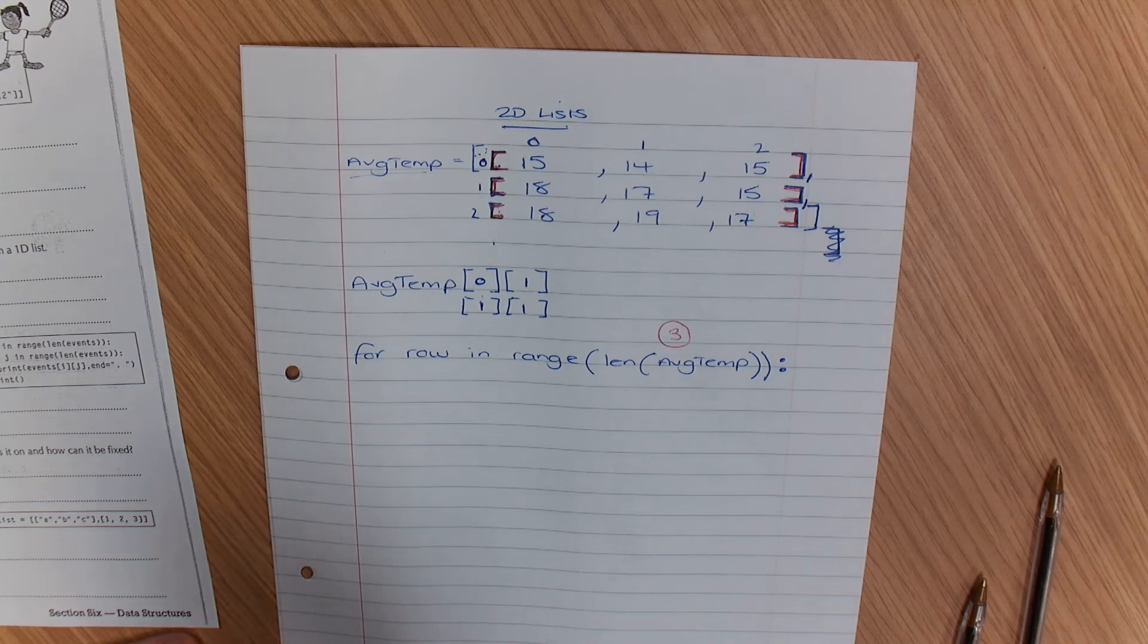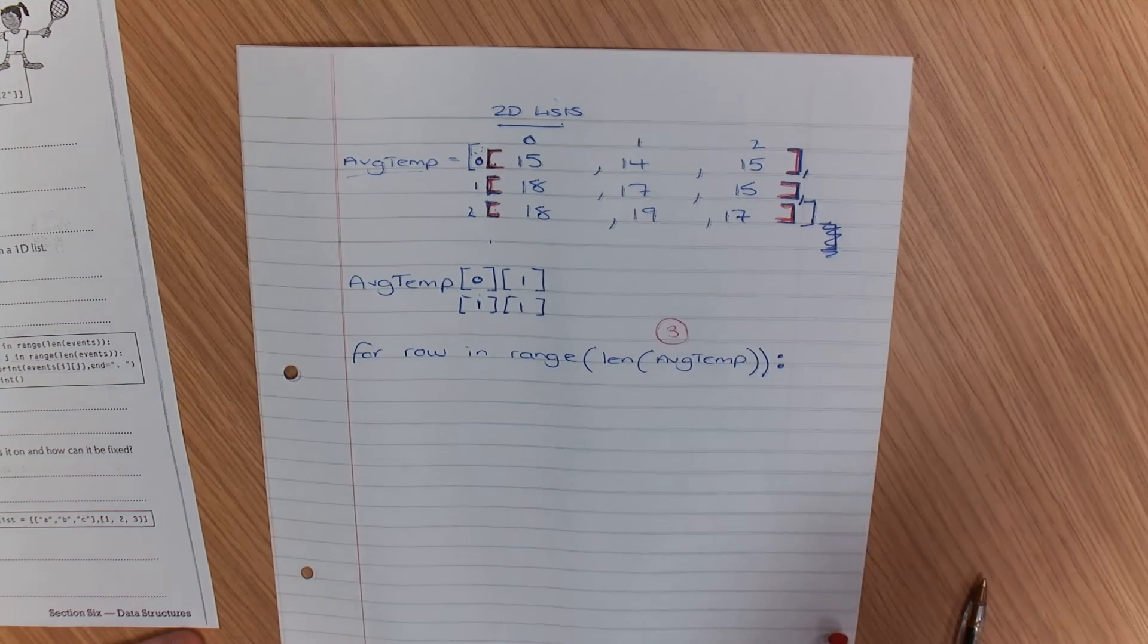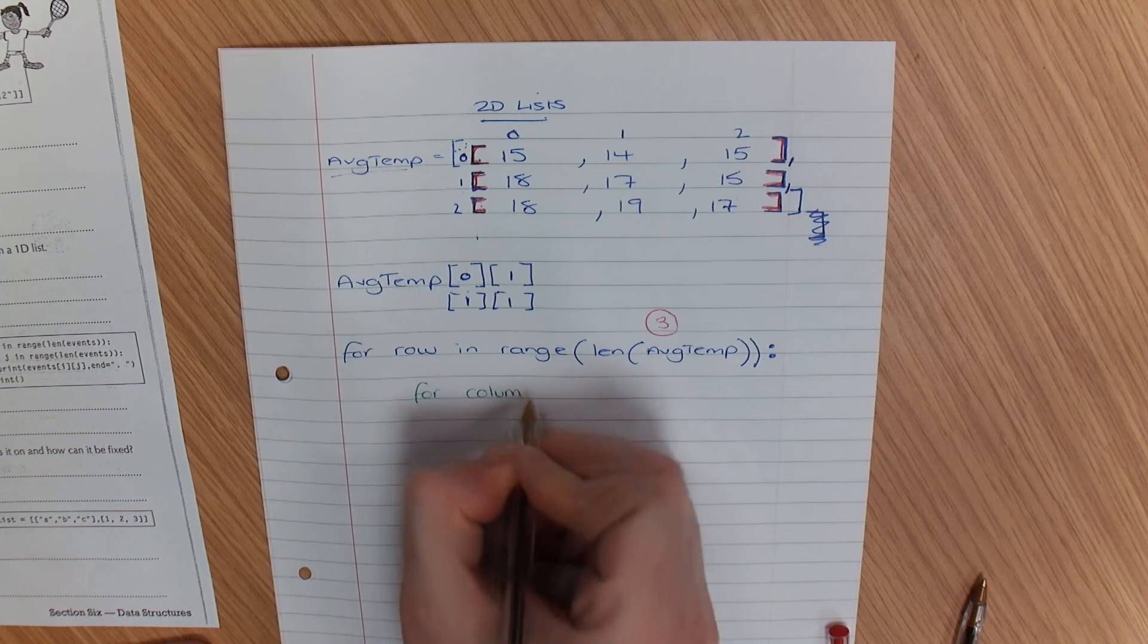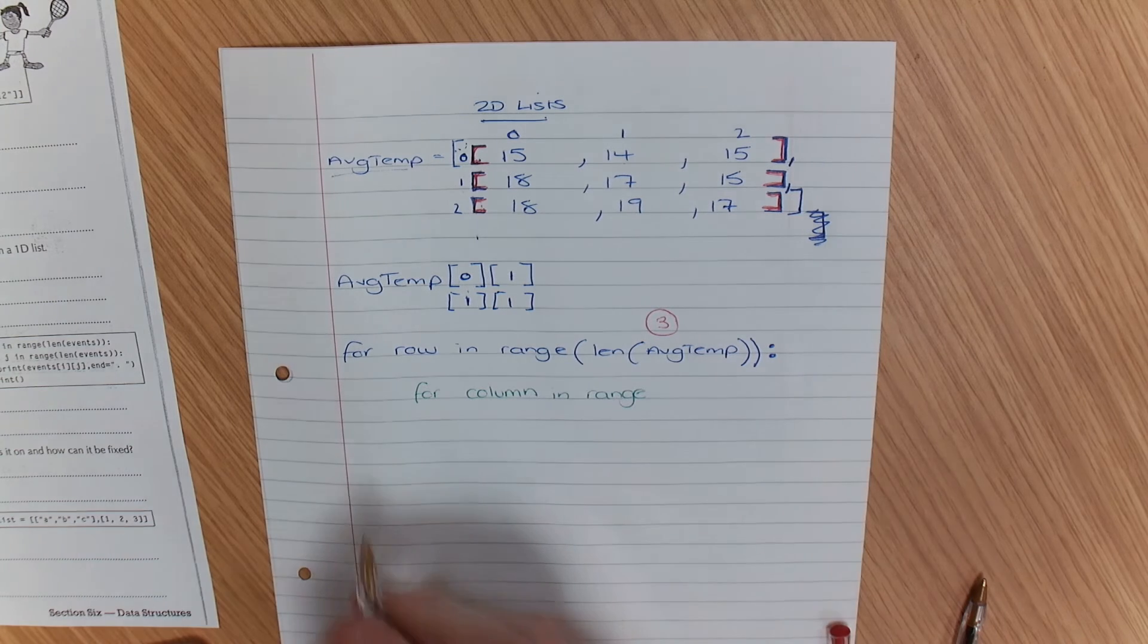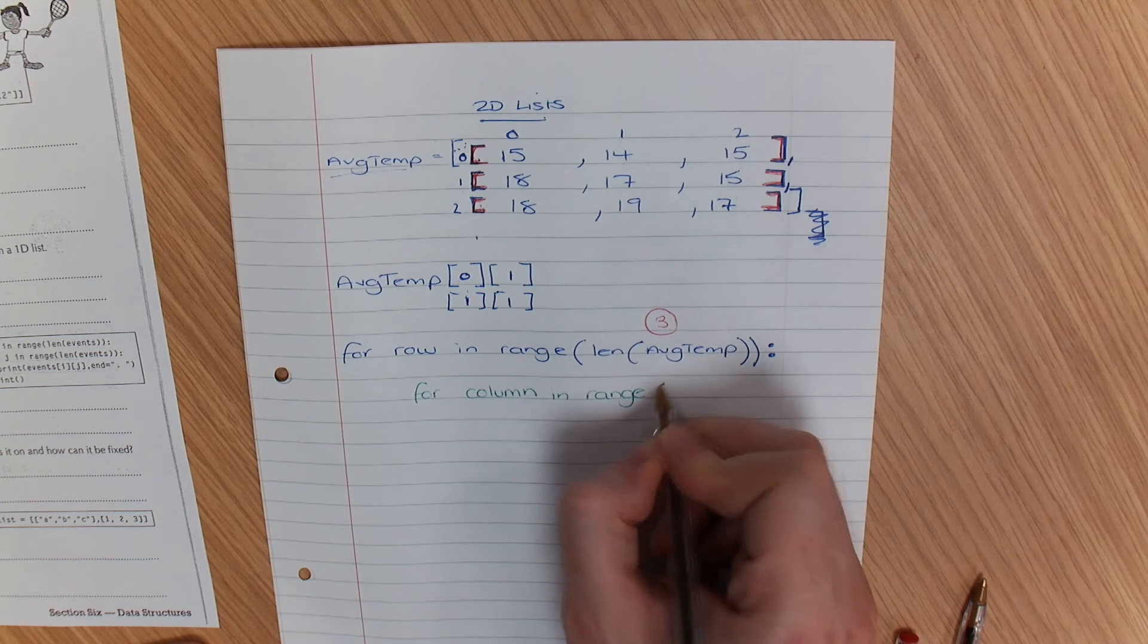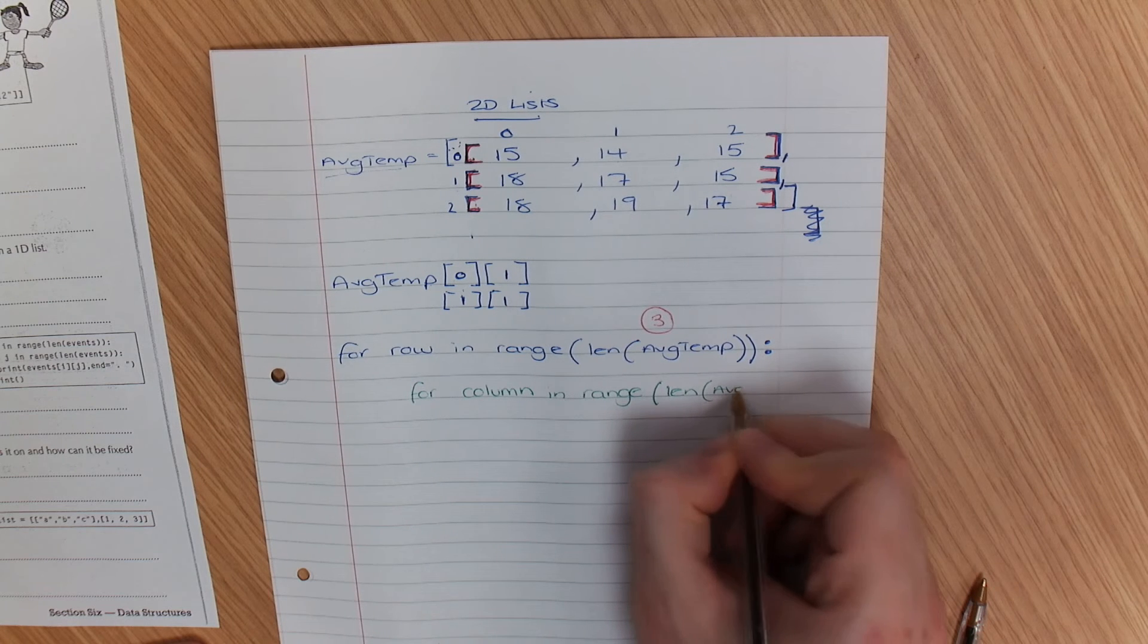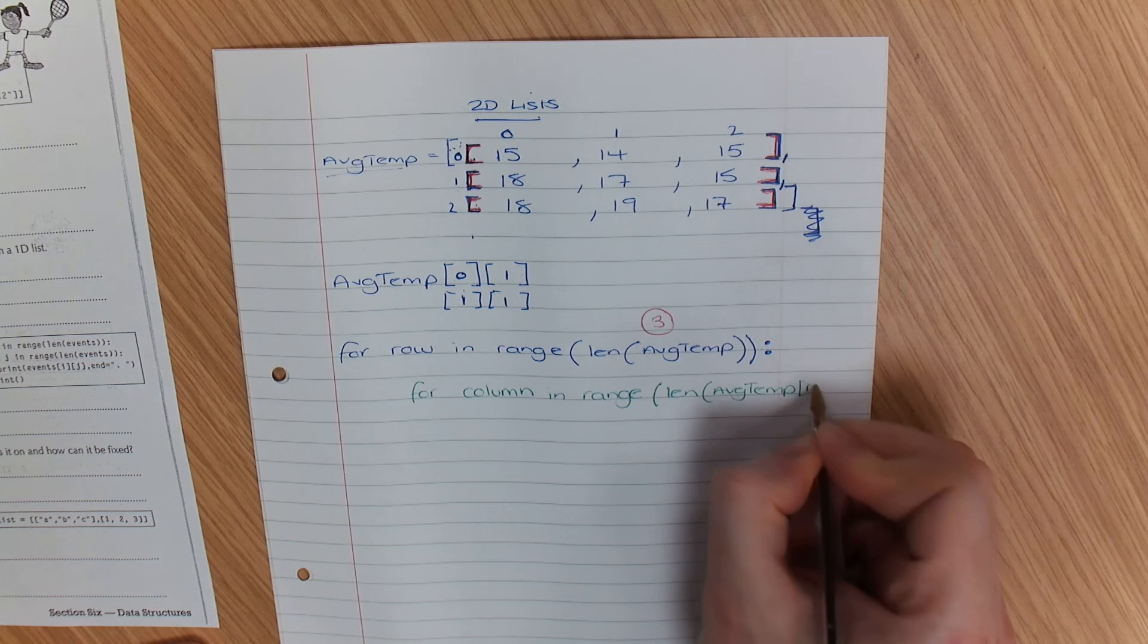Now, here's the next bit I've got to do. I've got to do a nested loop to know which column I'm on. So what I do is for column in range, but what you're going to have to do is get the len. So we're going to go for len of avg temp row.